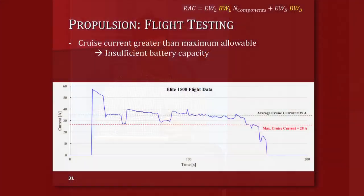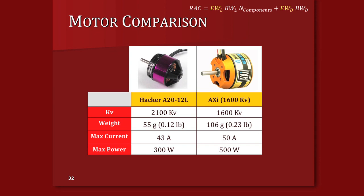Once static testing in lab was done, we put it on a plane and flight-tested that propulsion package. This flight data shows our current throughout the flight. Our average cruise current was about 35 amps, but our target maximum allowable cruise current was 28 amps. So we chose a higher power output, lower kV motor, which reduced our cruise current and allowed us to use the battery pack we had designed without adding additional cells or capacity.